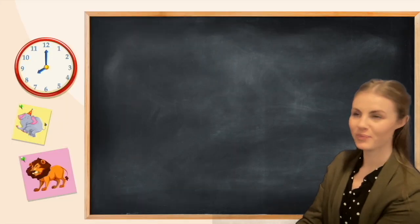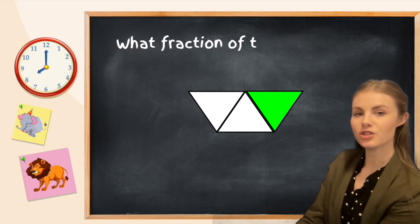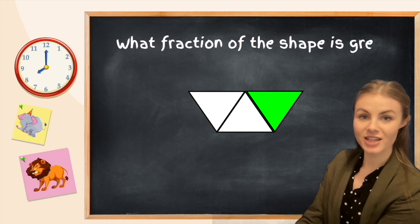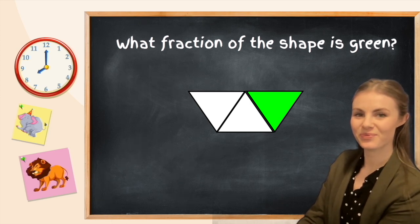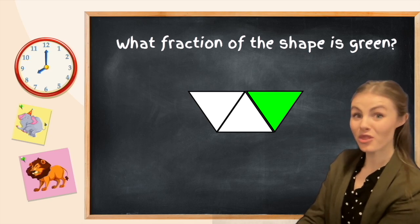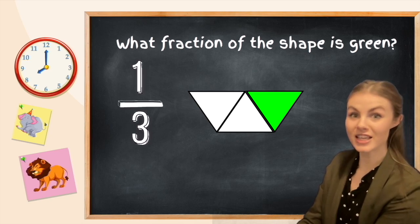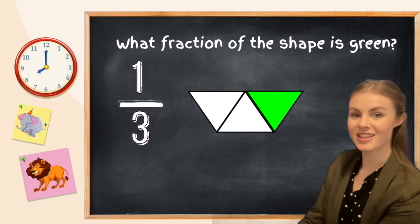Your turn now. Have a look at this shape. What fraction of this shape has been colored in green? Either tell the screen or an adult, pause the video now. Welcome back. It's one third, isn't it? Because there are three equal parts and one of those parts is green.